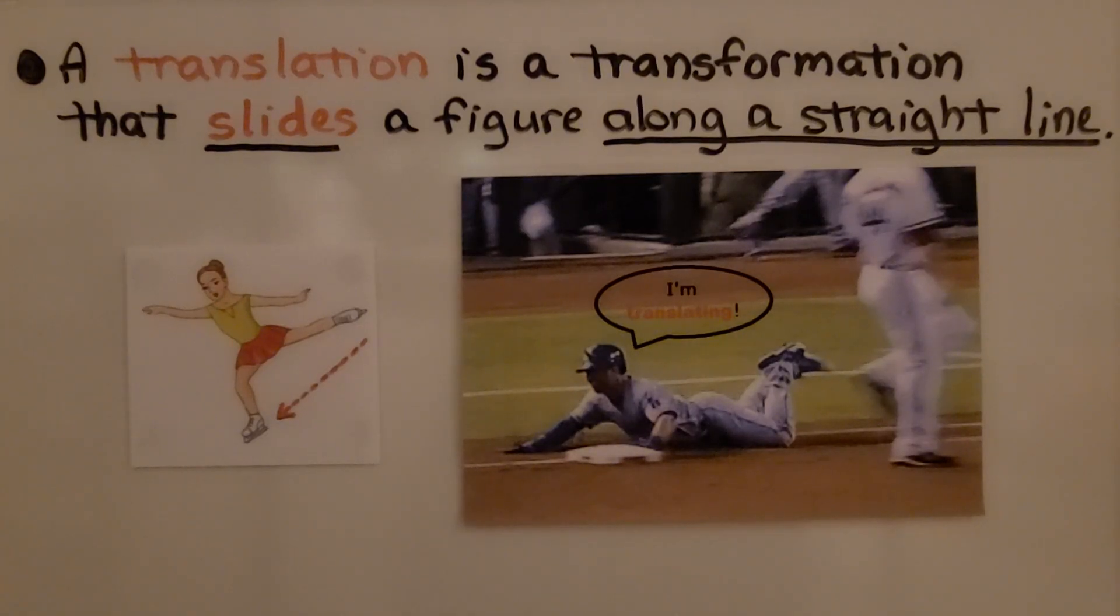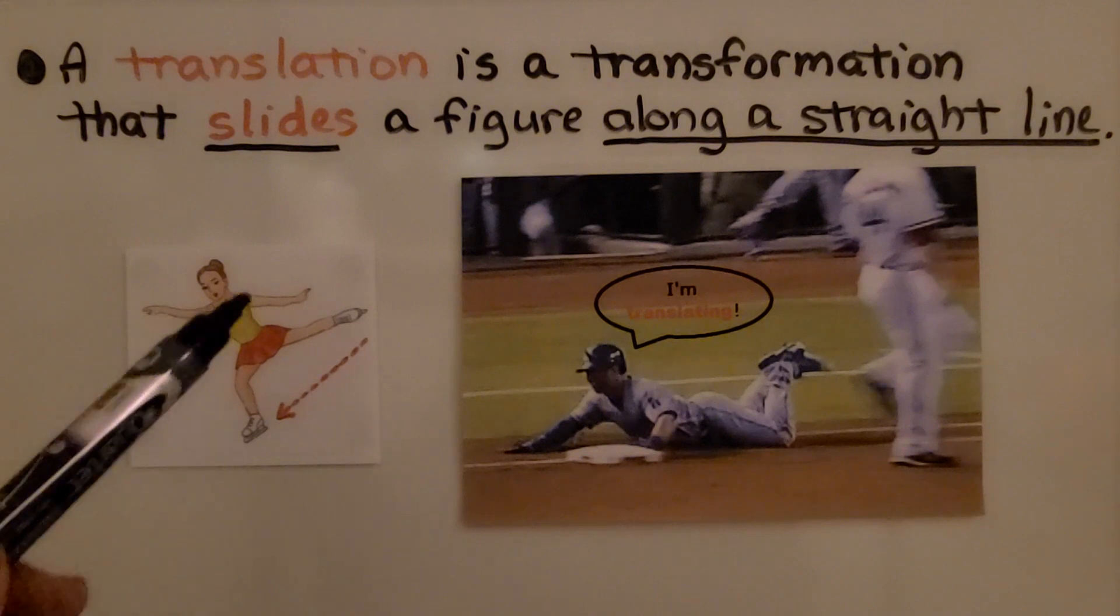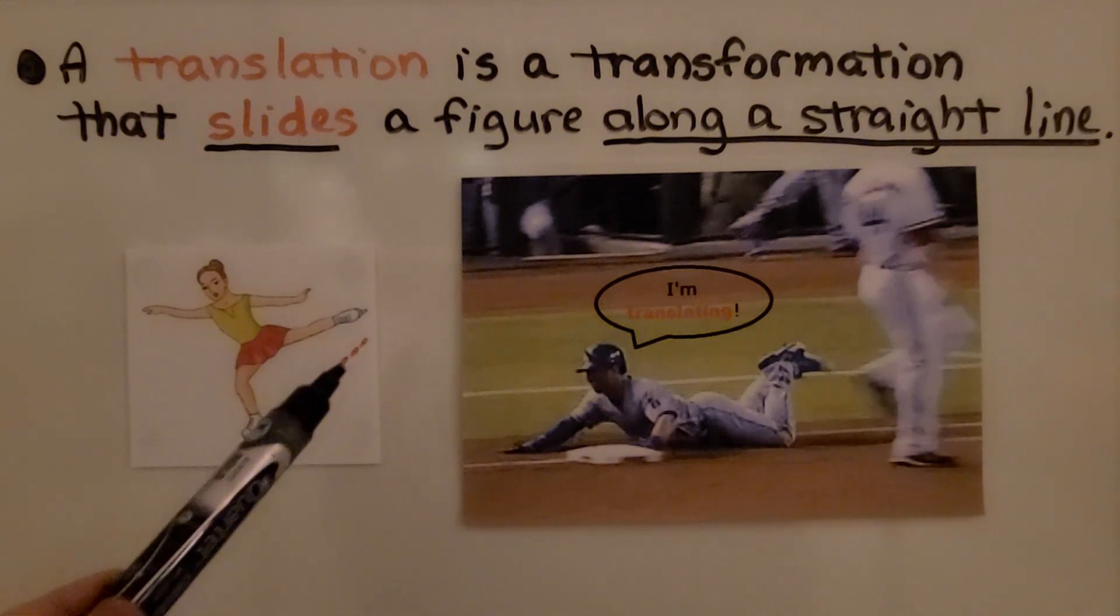A translation is a transformation that slides a figure along a straight line. As he's sliding to home base, if he stays in this position, he's translating. And if she stays in this position and slides on that skate in a straight line, she's translating.